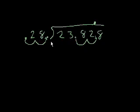How many times does 28 go into 238? So let's think about that. 28 is almost 30. 238 is almost 240. So 30 goes into 240 8 times, because 3 goes into 24 8 times. So I'm going to guess that 28 goes into 238 8 times. And it literally is a guess. You have to try out some numbers sometimes.